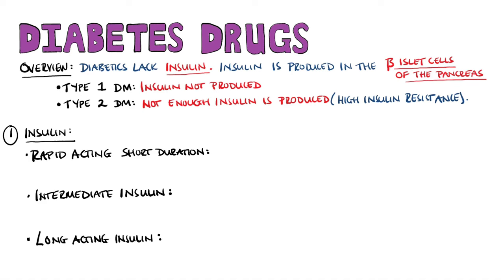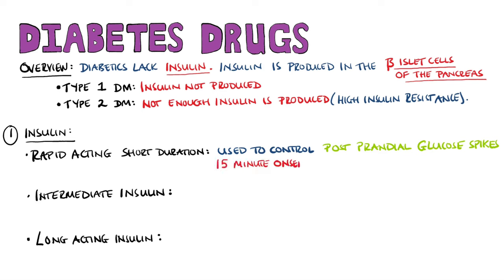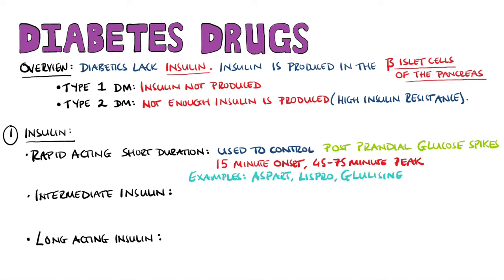Rapid-acting short-duration insulin is used to control postprandial glucose spikes. It takes around 15 minutes to reach its onset and 45 to 75 minutes to reach its peak. Examples include Aspart, Lispro, and Glulisine.